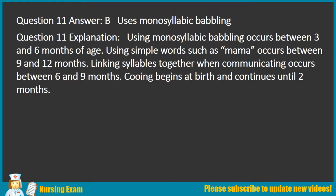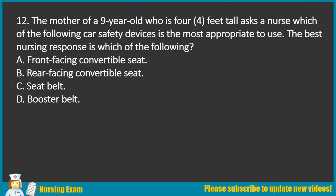Explanation: Using monosyllabic babbling occurs between 3 and 6 months of age. Using simple words such as mama occurs between 9 and 12 months. Linking syllables together when communicating occurs between 6 and 9 months. Cooing begins at birth and continues until 2 months.